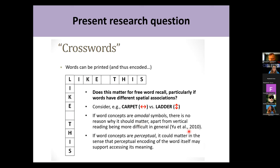There's evidence from the eye tracking literature as well. On the other hand, if word concepts are perceptual, it could matter in the sense that perceptual encoding of the word itself may support accessing its meaning. So it depends on how you read something like carpet or ladder during encoding and later recall of these words.